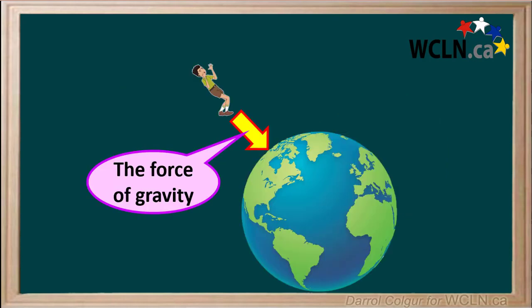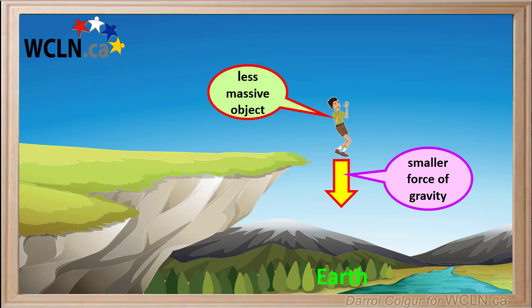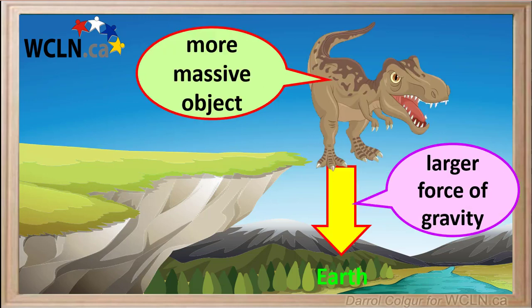The Earth has a very large mass, so the force of gravity it exerts on other objects is quite noticeable. But the force of gravity also depends on the object being attracted to the Earth. An object with a lower mass will experience a relatively small force of gravity, whereas an object that has a higher mass will experience a larger force of gravity.